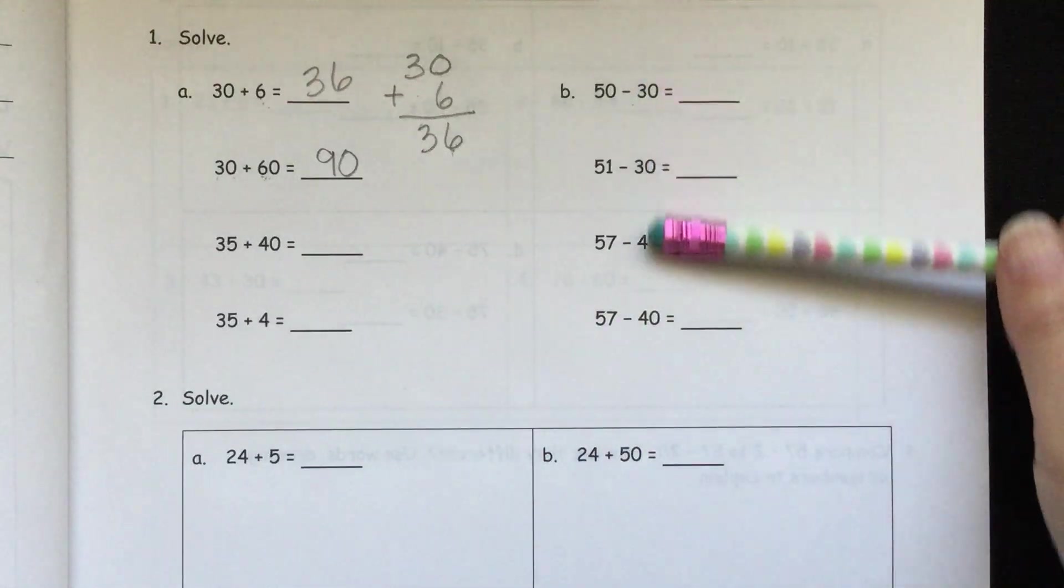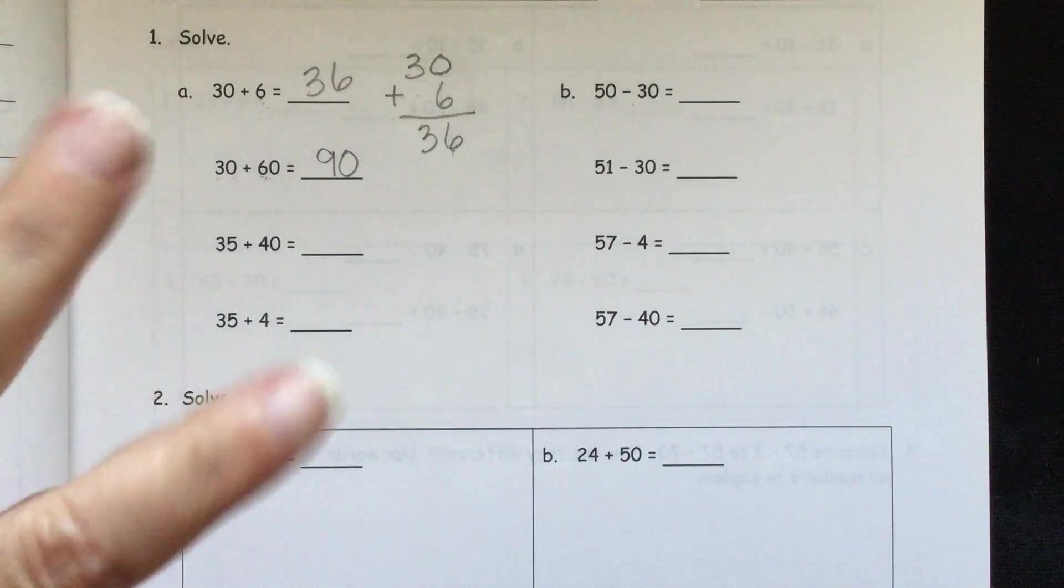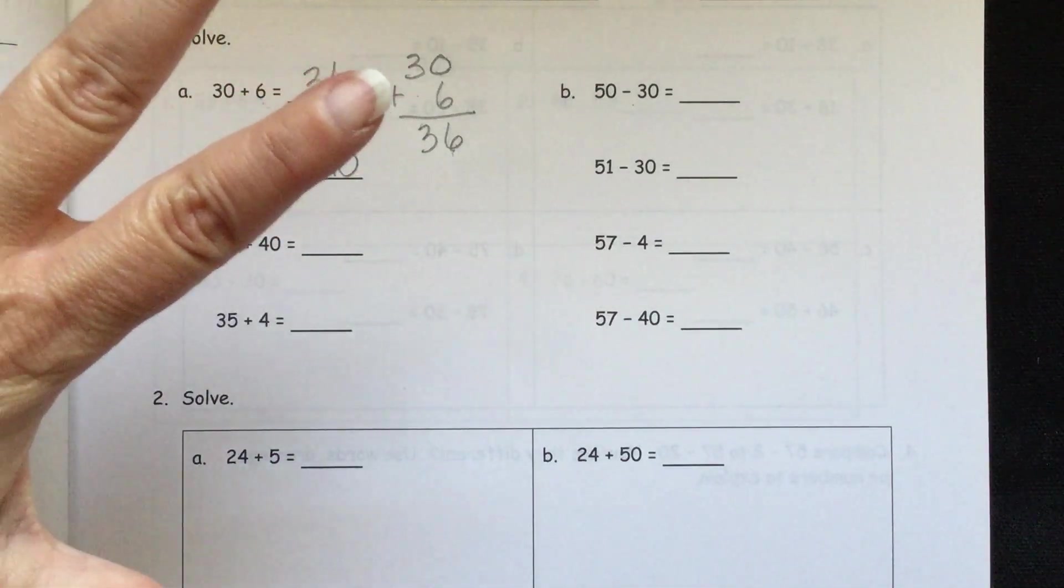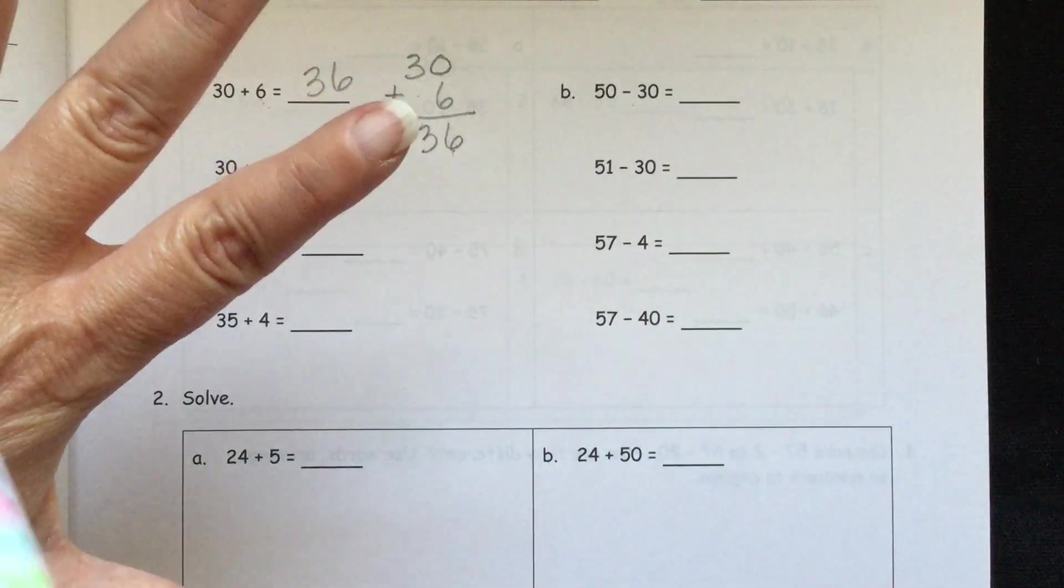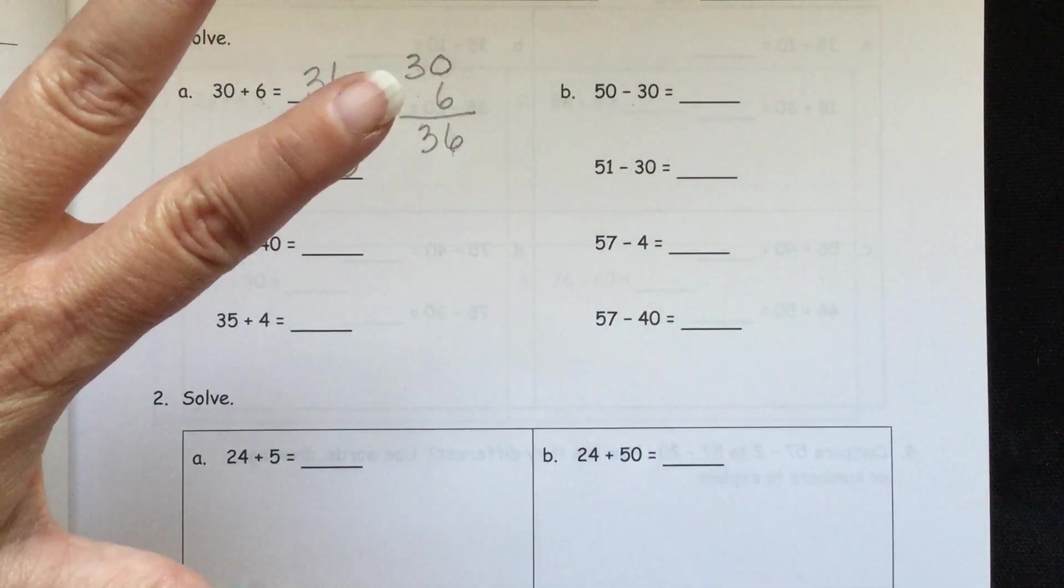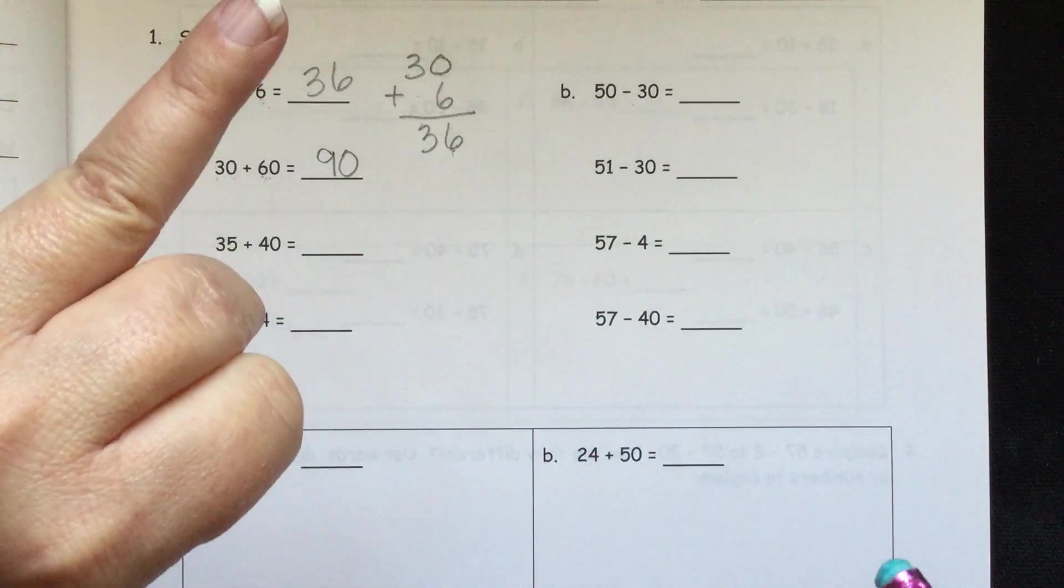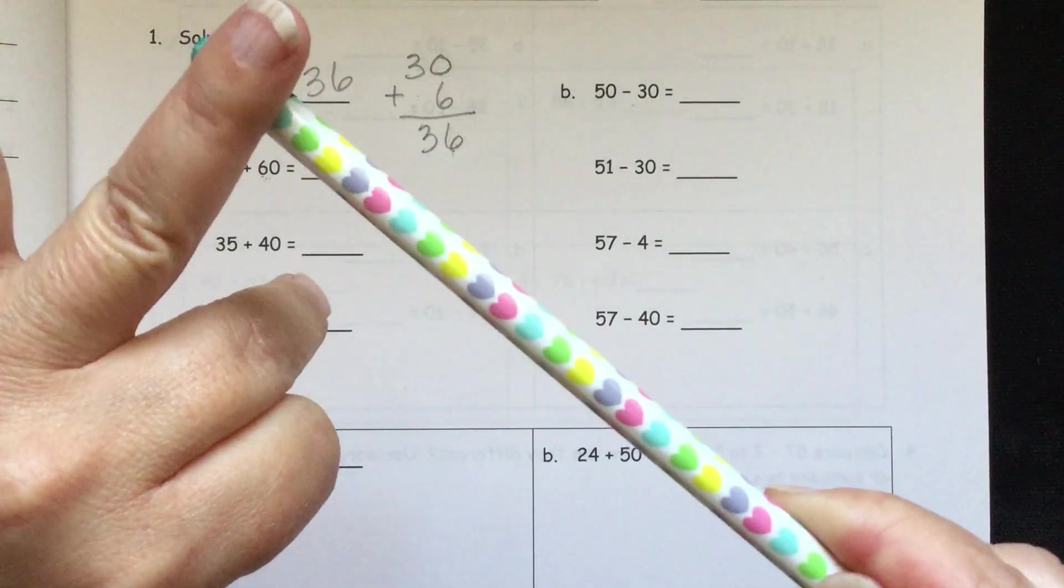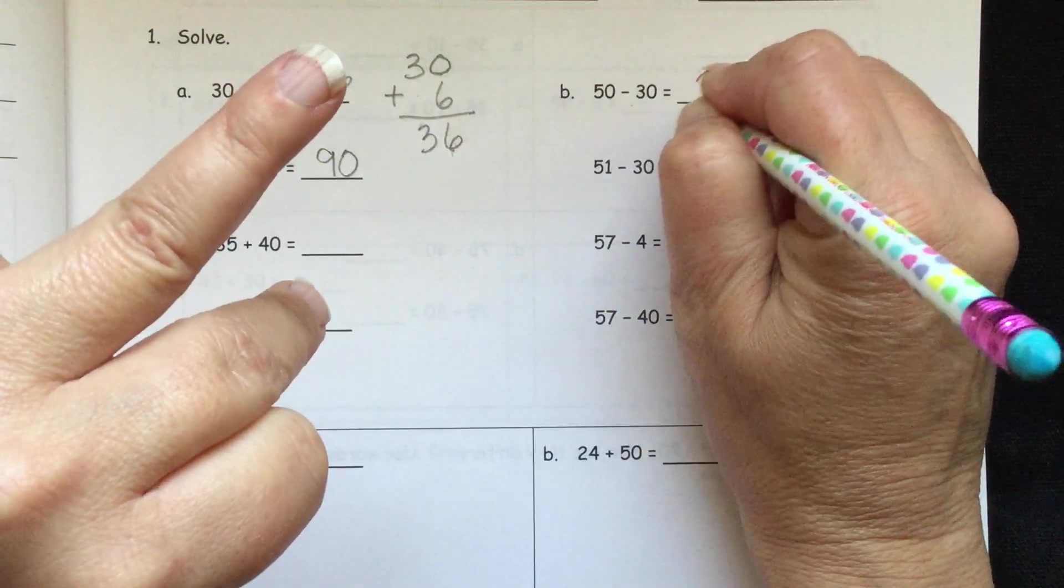And then in column B, we have subtraction. So if our fingers are representing tens, then we have 5 tens and we need to take away 30. So we have 10, 20, 30, 40, 50. We'll take away 30. So 10, 20, 30. And you see I have 2 left. So these are tens. So this is 10, 20. So we have 20.